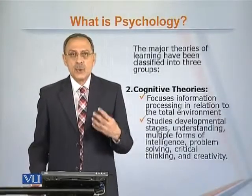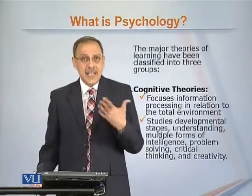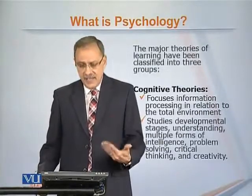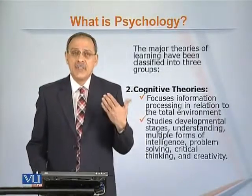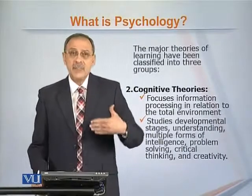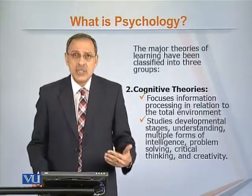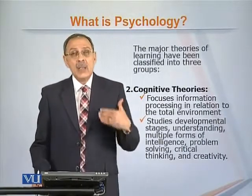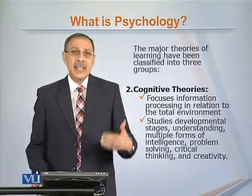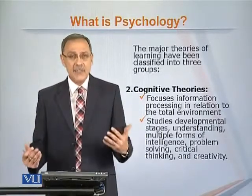The second group of psychological theories that are classified are cognitive theories. The word cognitive comes from cognition, which is thinking — the ability to think. Different individuals think differently.